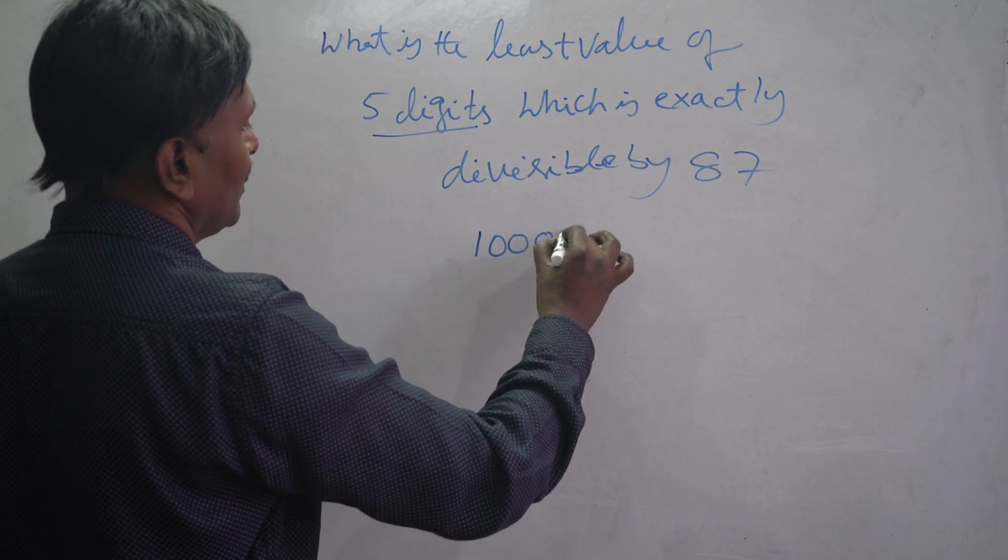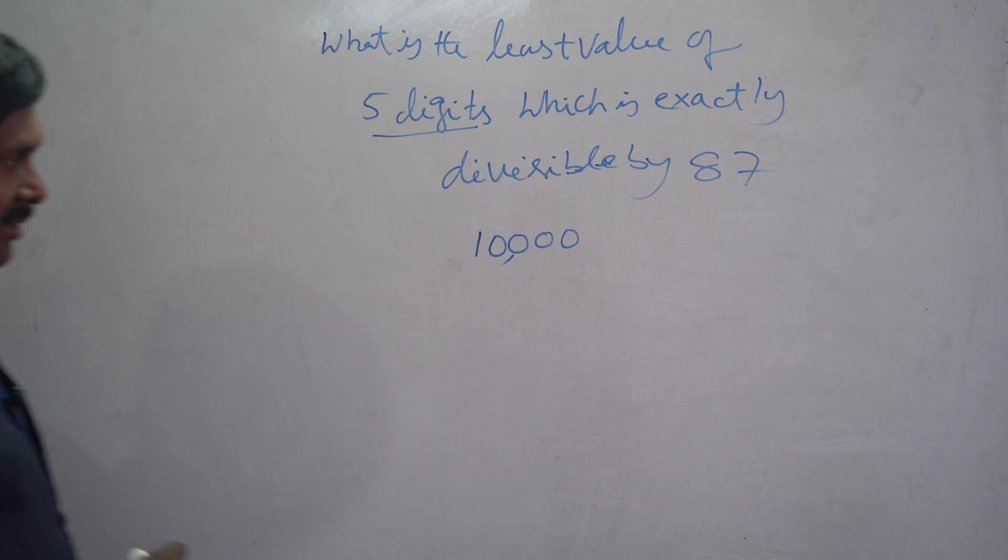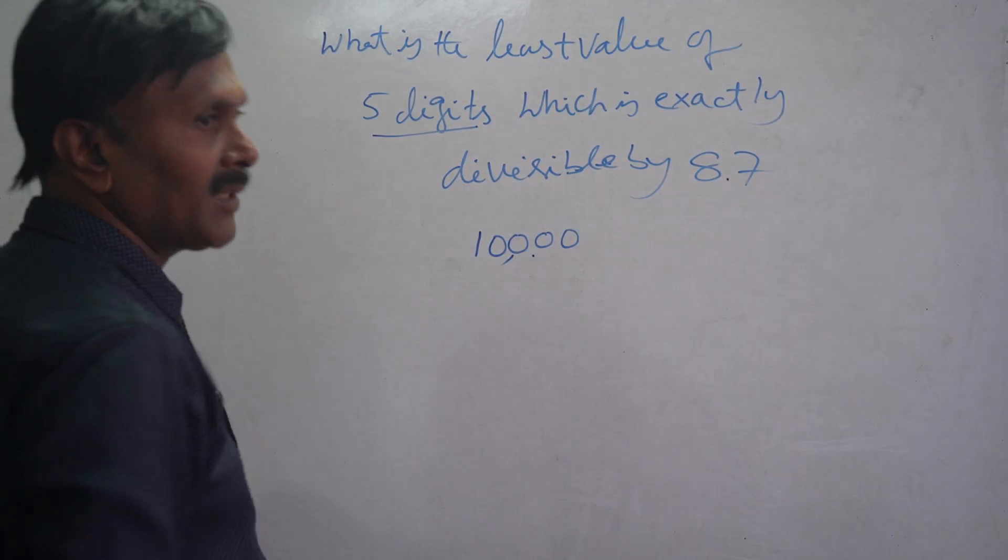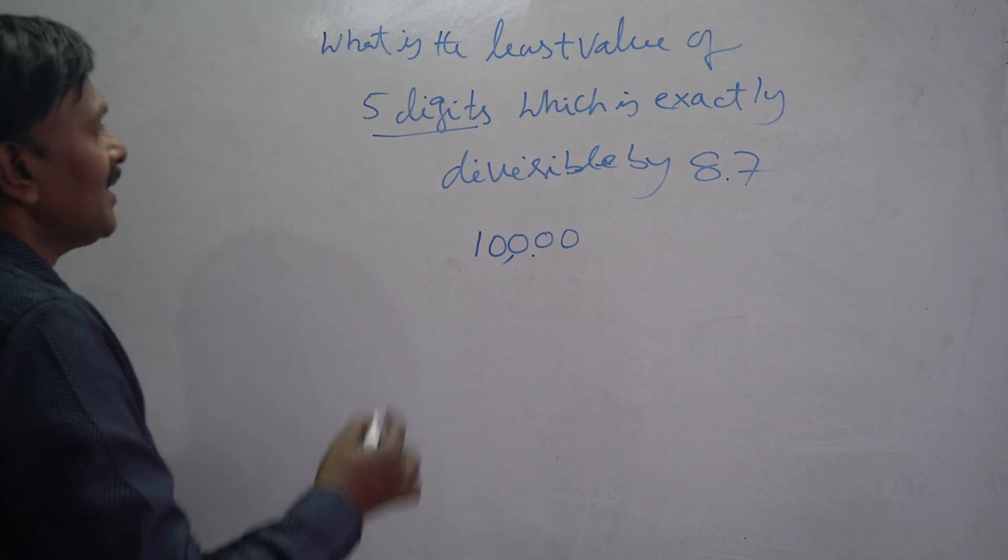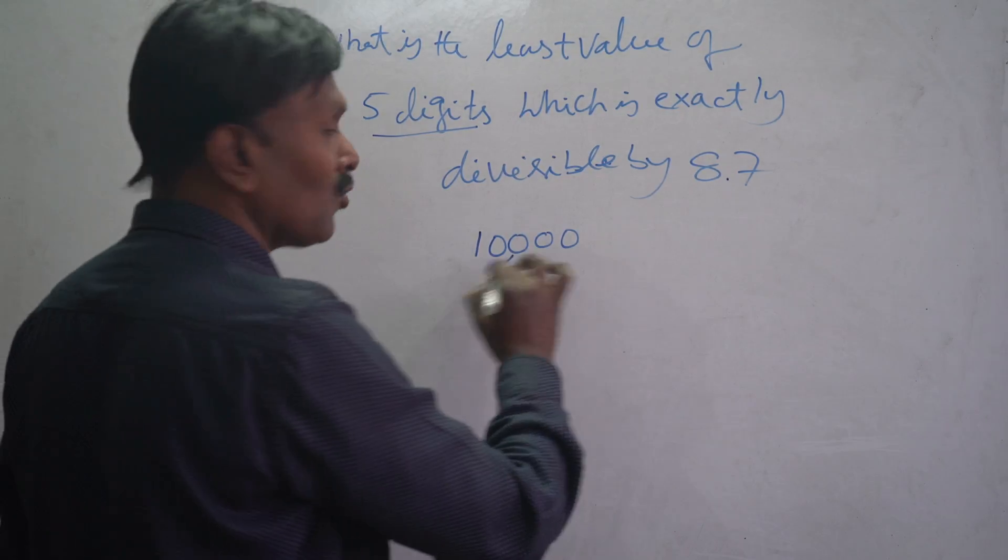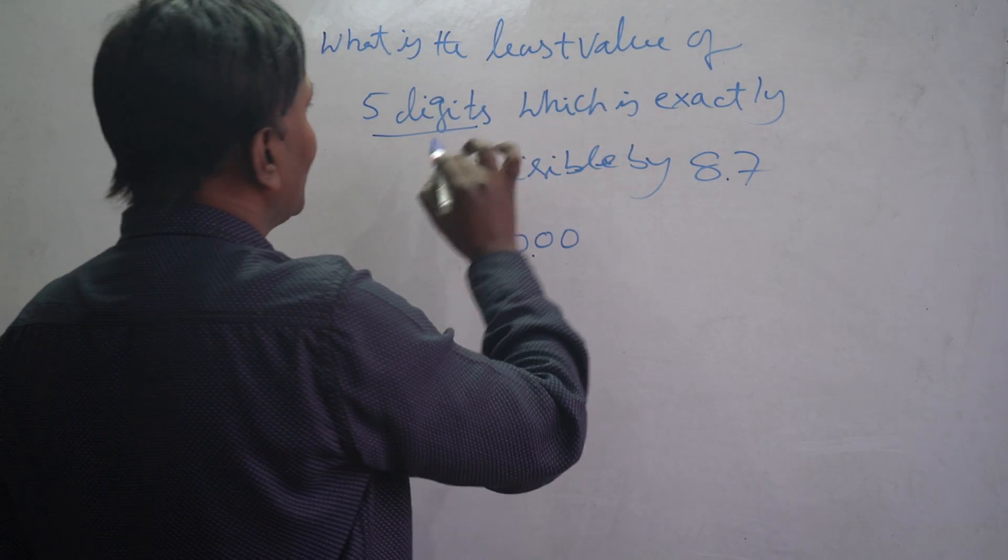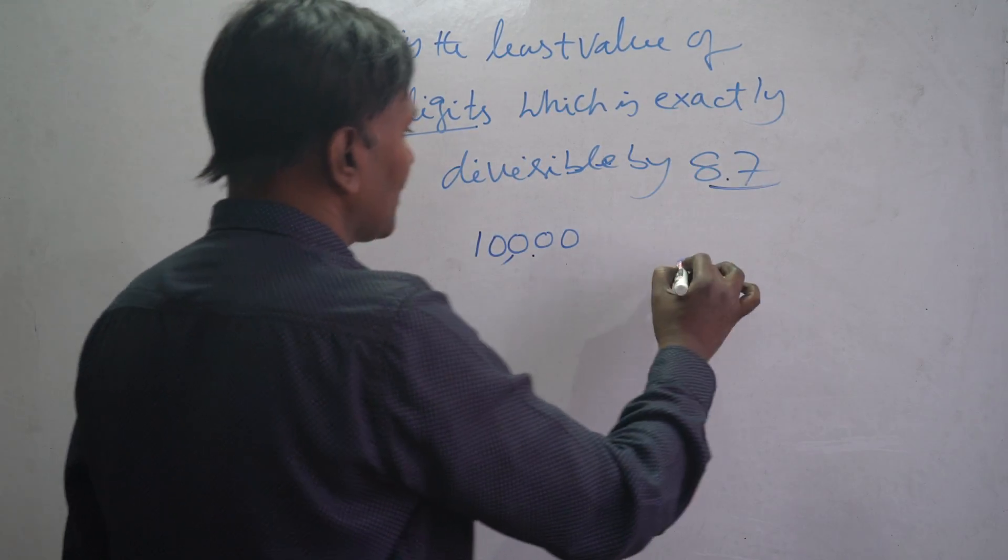But 10,000 is not exactly divisible by 87. We have to add something to this number, so we have to find that number to make it exactly divisible by 87.